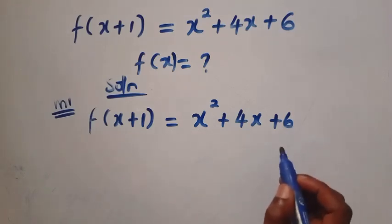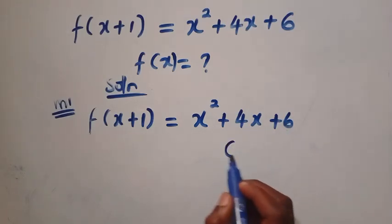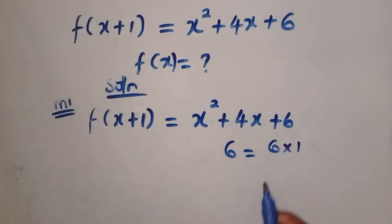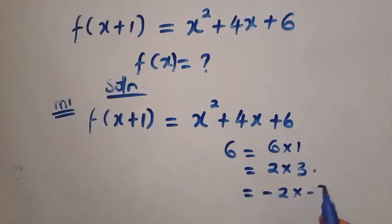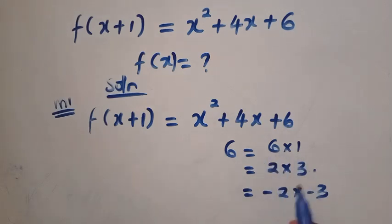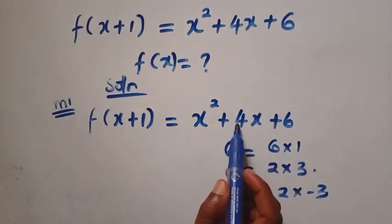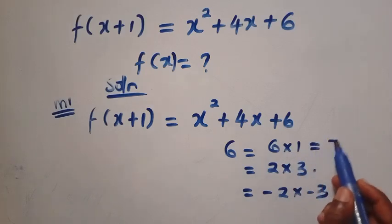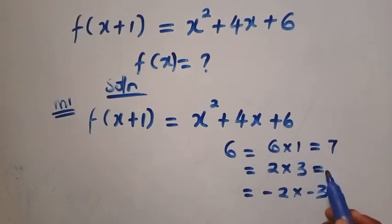Because if we try to look for some number here, like we have 6, so 6 is equal to 6 multiplied by 1. This 6 also equals 2 multiplied by 3. And we can still have 6 as minus 2 multiplied by minus 3. But the sum of all these one, nothing equals 4. If we add 6 plus 1, that gives us 7. If we add 2 plus 3, that gives us 5.